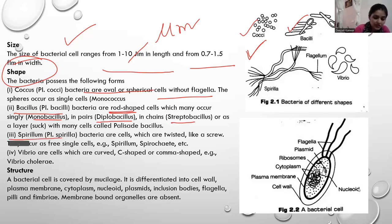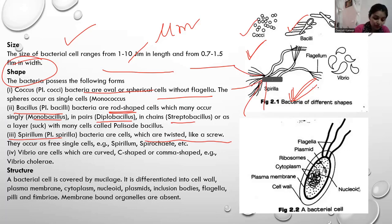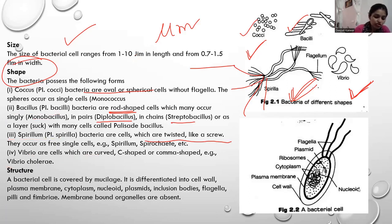Spiral — meaning spiral shape, they are twisted. You can see here, this is spirilla, and in this you can also see flagella clearly. Next is vibrio — vibrio is comma-shaped and curved. An example of this is Vibrio cholerae. So we have discussed some shapes and sizes of bacteria.